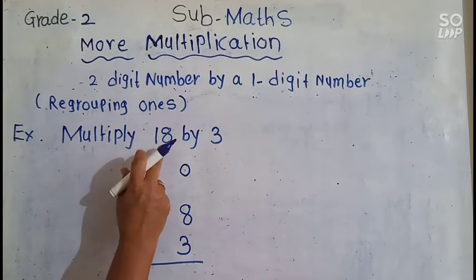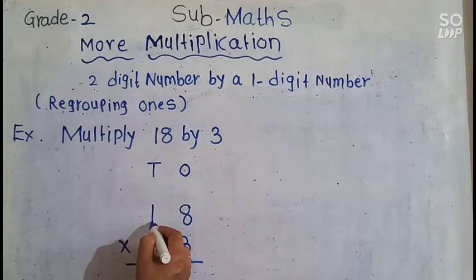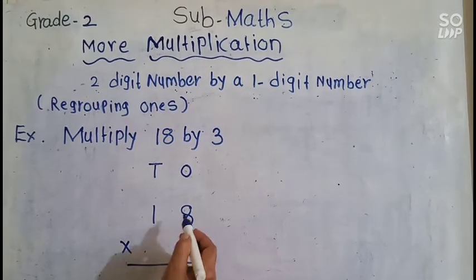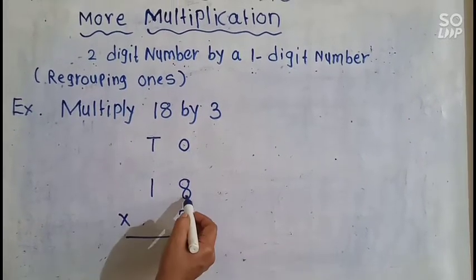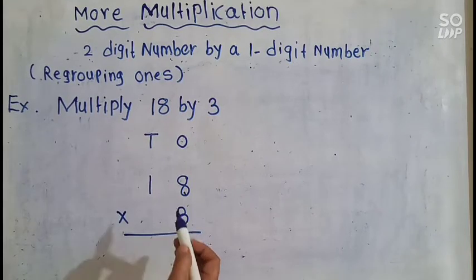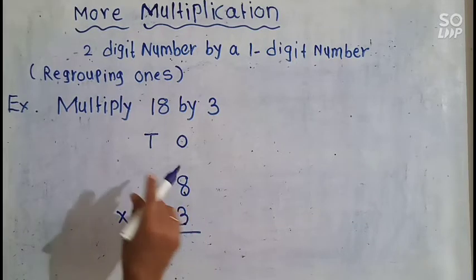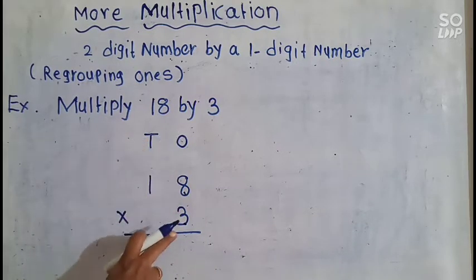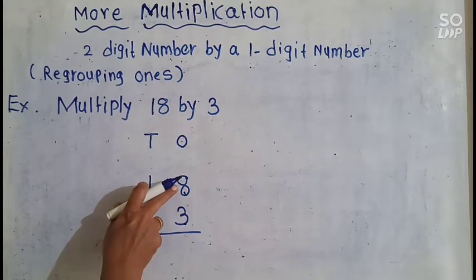Here, multiply 18 by 3. We write these numbers in a column. This is a 2-digit number and we have to multiply with a 1-digit number. You know the table of 3, so first we will do the 1s multiplication. Start from the 3s table up to 8.